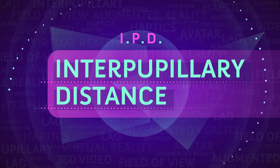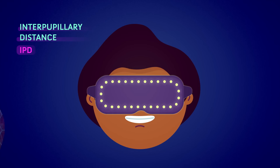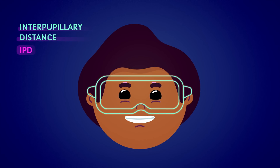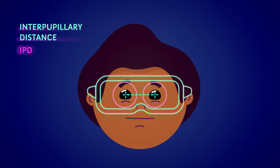IPD, interpupillary distance, is the space between the center of your pupils. Premium headsets allow you to change the distance of the lenses for a better image.